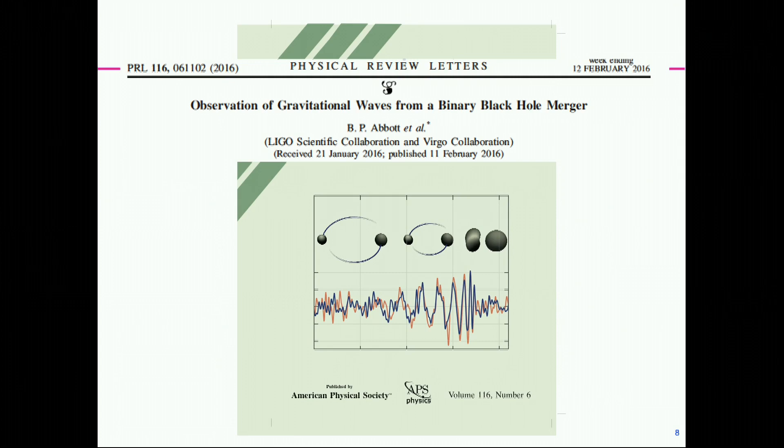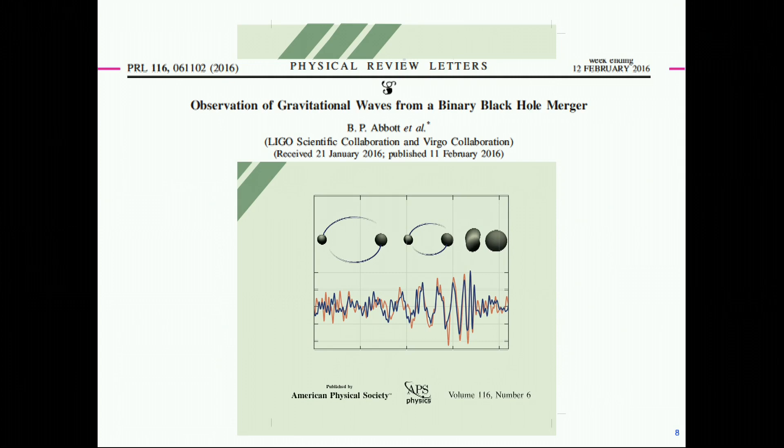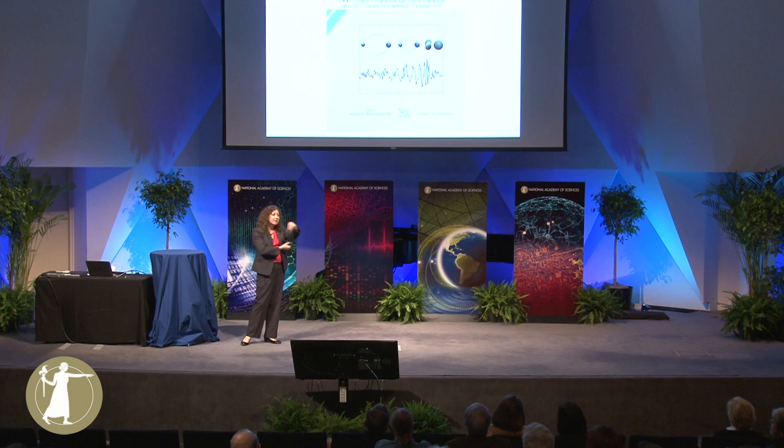This is the gravitational wave we saw. What you see here is the signal in the photocell in Hanford, and the signal in the photocell in Livingston — observatories 3,000 kilometers apart. And what you see is noise, and then something that looks like a sine wave that grows in amplitude and frequency and then disappears into the noise.